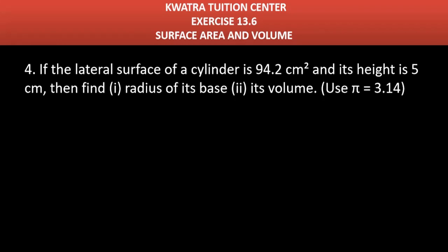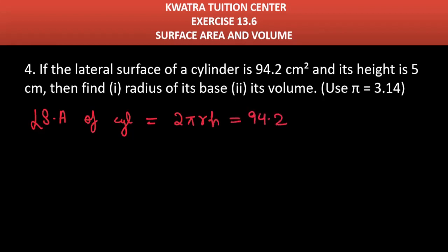So you have the lateral surface area. The lateral surface area of a cylinder — you should know this formula. It is basically 2πrh = 94.2. The height is 5 cm, π value is 22/7, r will be r, and h value is 5, so it equals 94.2.